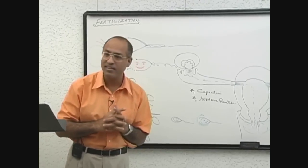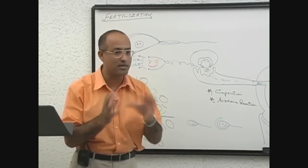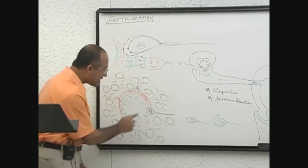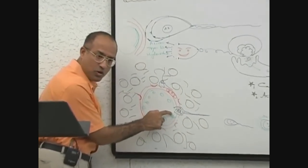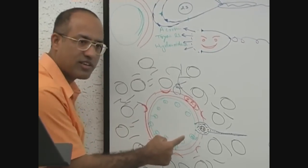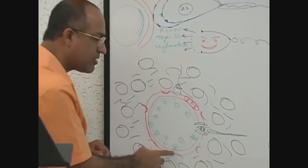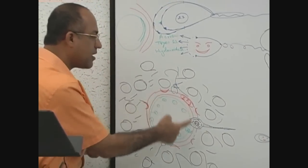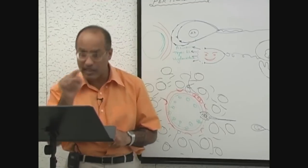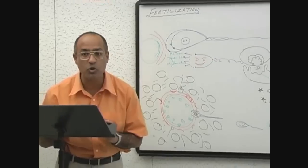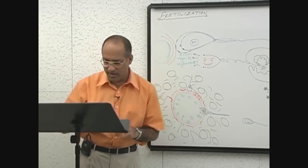That will create real mess and havoc—polyspermy—and all the genetic number of chromosomes will be disturbed. So as soon as the first sperm's membrane touches the ovum, ovum undergoes cortical reaction. Cortical reaction releases cortical granules and they release enzymes, and these lysosomal enzymes produce changes in the zona pellucida. This reaction in the zona pellucida is called zona reaction. So cortical reaction leads to zona reaction.